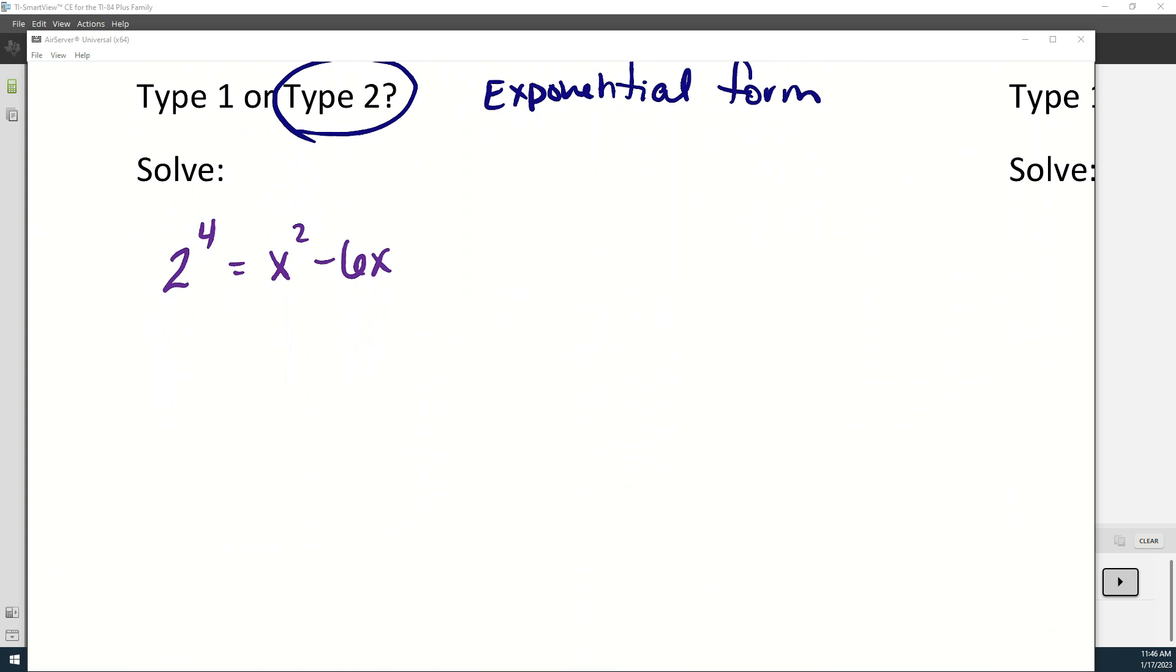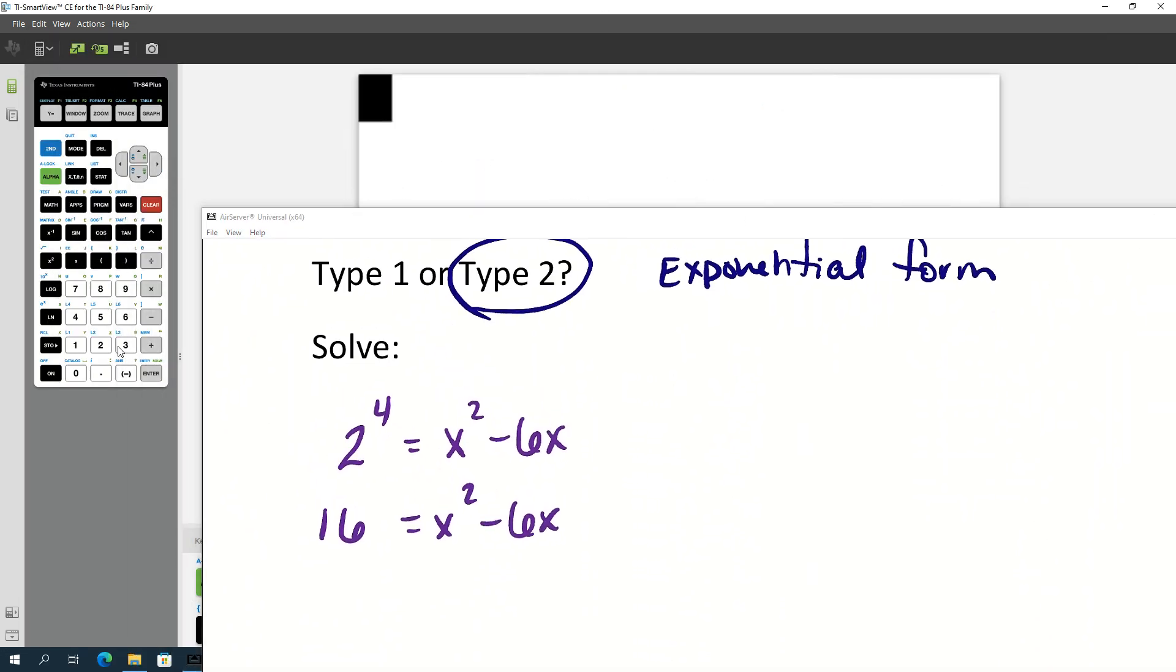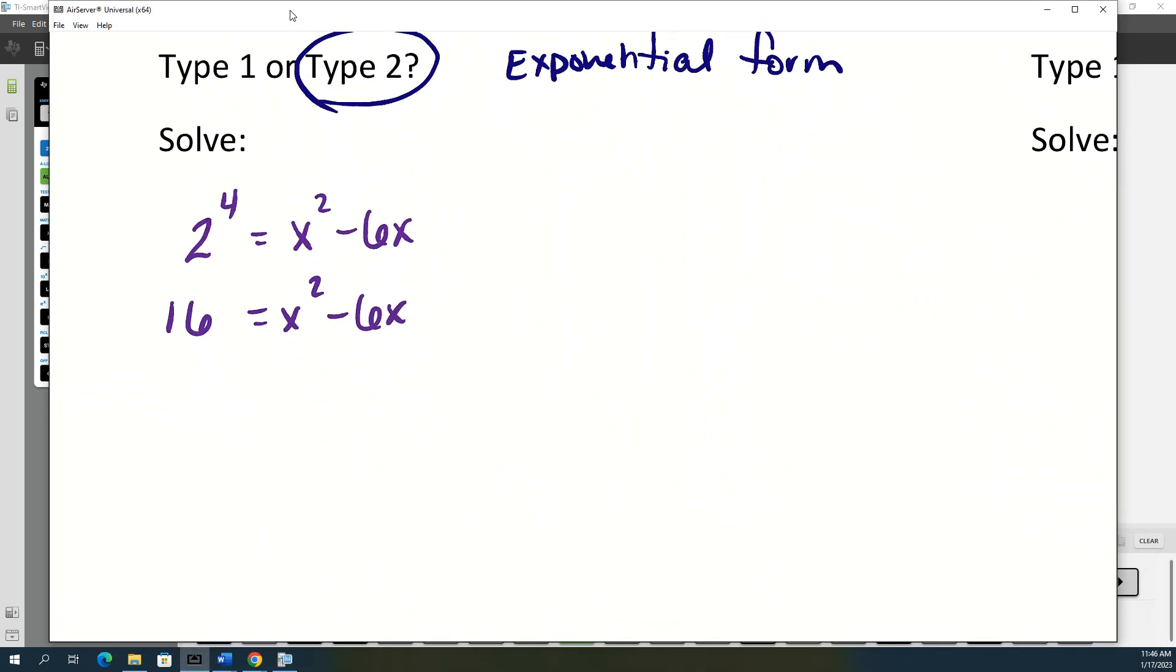And then from here, we're going to solve it. So 2 to the 4 is 16. You can do that in the calculator if you need to. And then this is another quadratic equation. So we are going to get everything on one side.